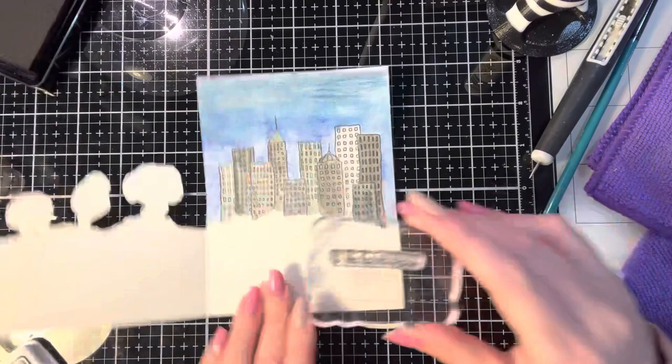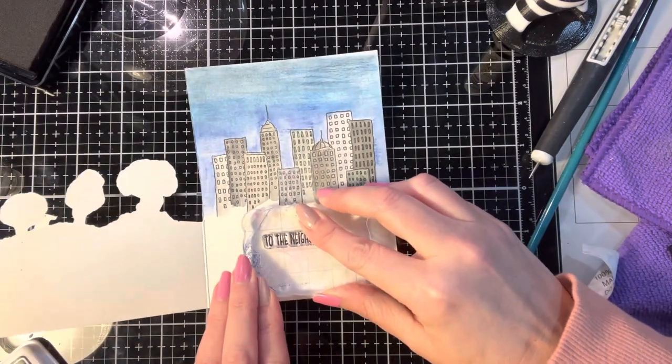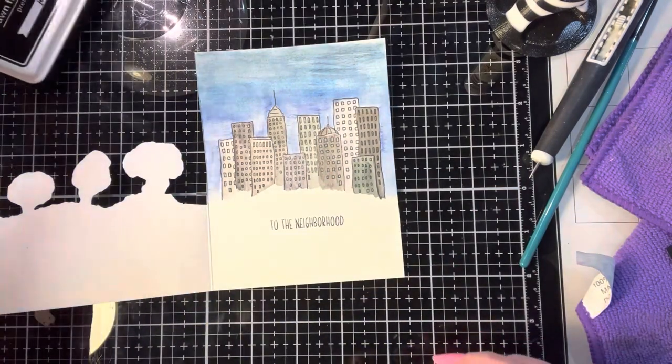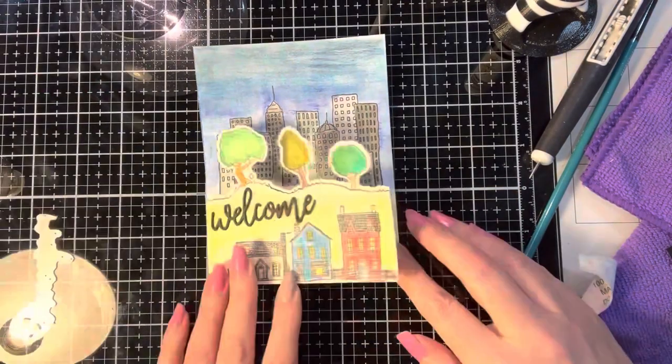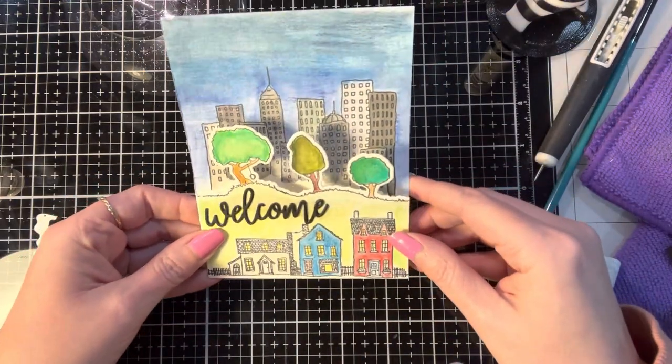Now I'm stamping that to the neighborhood on the inside and I'm using a stamp block. So I'm being very brave by doing that because I did not prep the stamp. I didn't do anything. I would normally use my MISTI, but didn't feel like dragging it back out.